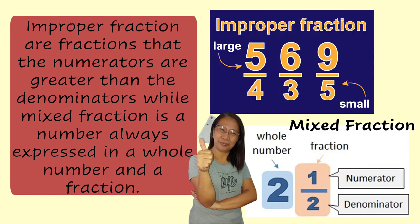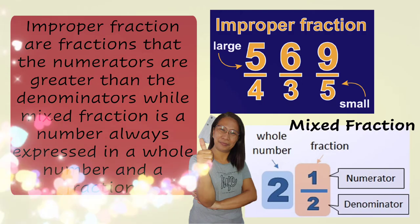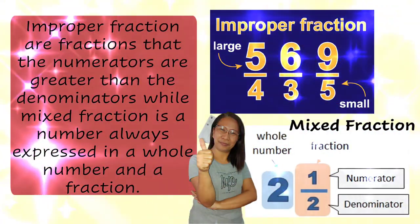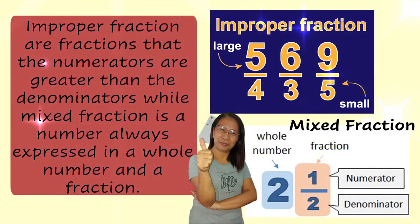Improper fractions are fractions where the numerators are greater than the denominators, while a mixed fraction is always expressed as a whole number and a fraction. These two types of fractions show two or more things to be divided. In this lesson, you will observe that improper and mixed fractions are related and can be changed to each other.